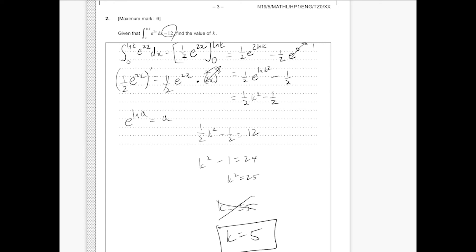Because if k were to be negative 5, we'd have ln of minus 5, which wouldn't work. It wouldn't exist. So the answer is k equals 5.